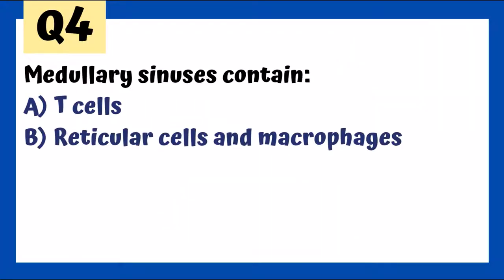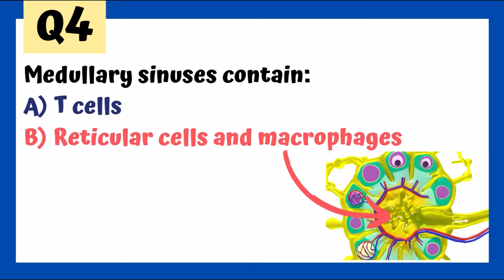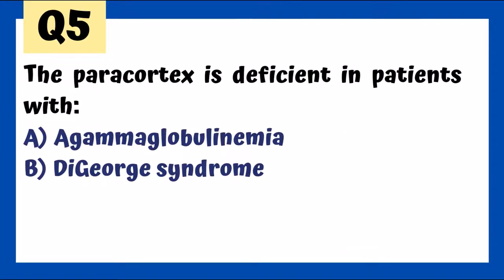Medullary sinuses contain reticular cells and macrophages, as seen in this 3D model of the lymph node. The paracortex is deficient in patients with DiGeorge syndrome, where we see deficient T-cells — since the paracortex is for T-cells, not in agammaglobulinemia. Question six: the spleen is protected by ribs 9 and 11 on the left, as seen on abdominal CAT scan.